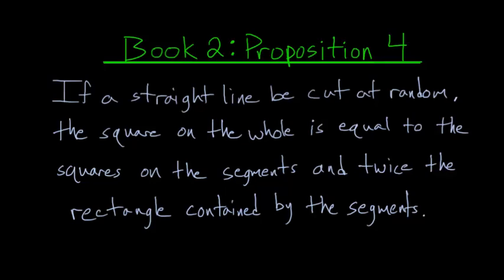For the fourth proposition of Book 2 of Euclid's Elements: if a straight line be cut at random, the square on the whole is equal to the squares on the segments and twice the rectangle contained by the segments.